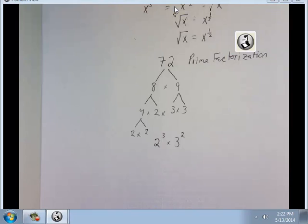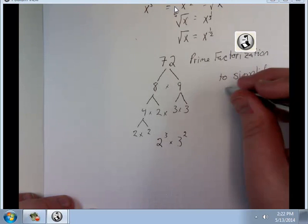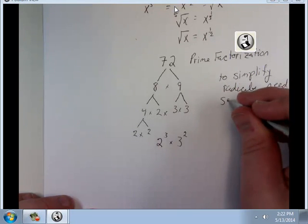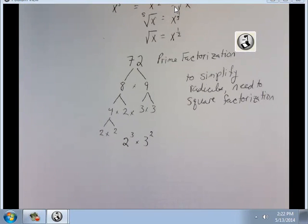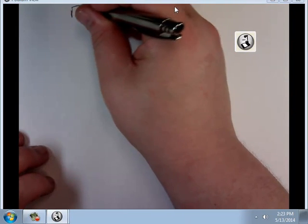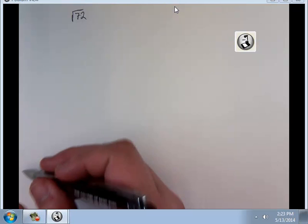Which means we're getting down to the prime numbers. What we're going to do to simplify radicals is called square factorization. Okay, so pull up a new sheet and we're going to do square root of 72.